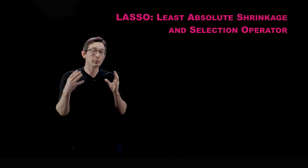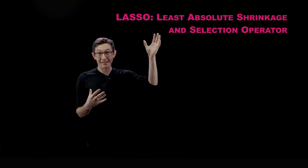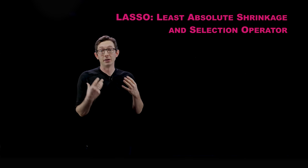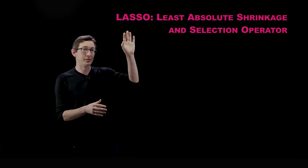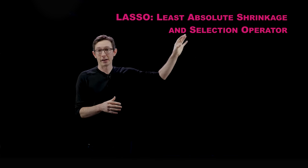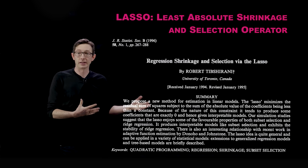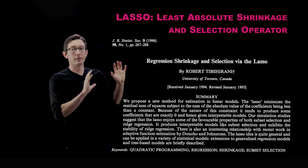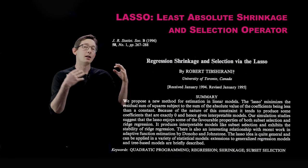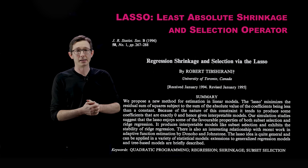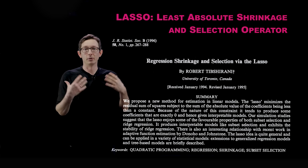Welcome back. I'm Steve Brunton, and today I'm really excited to tell you about the LASSO algorithm, which is a really powerful method from statistics for variable selection and for getting interpretable regression models that don't overfit to your data. LASSO stands for least absolute shrinkage and selection operator. This was introduced in 1996 by Robert Tibshirani, who is now a professor at Stanford. This is one of the early papers in the resurgence of sparsity in statistics, kind of robust interpretable statistics.